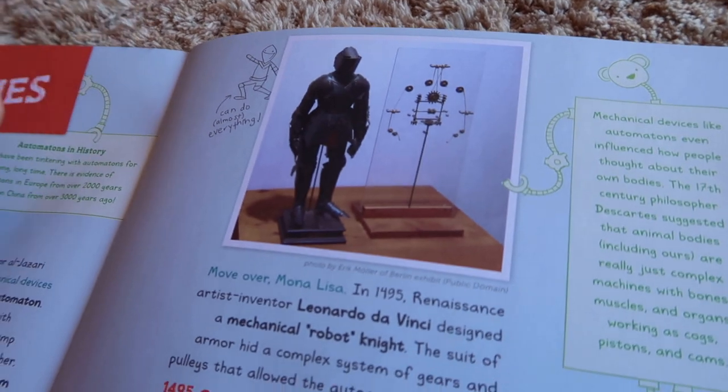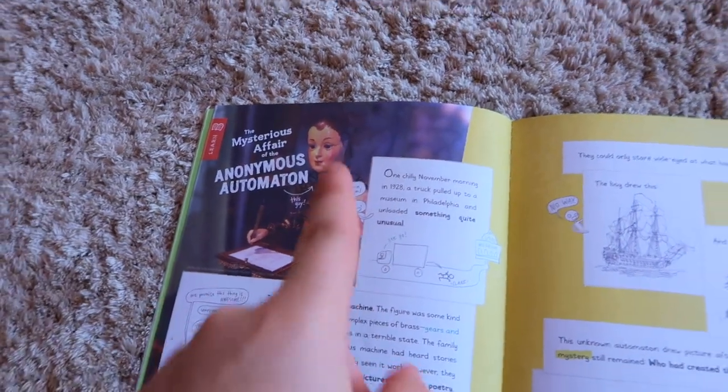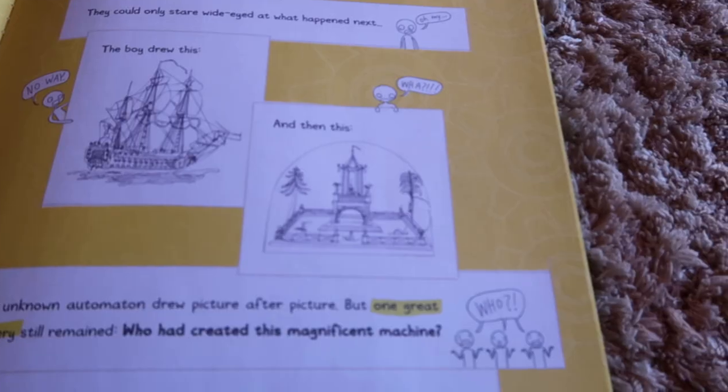So we're learning about automatons in history and there's a whole bunch of really cool machines that have been made throughout the history. This book about automatons, there's this little robot boy. There's this man that created it and sent it to a place. And some people found it and gave it to some experimenters and it drew pictures. It was that big, and now it's in a place.